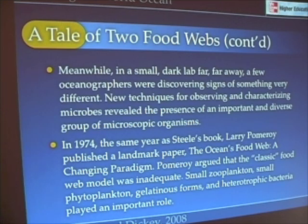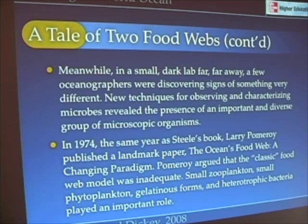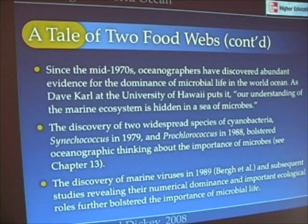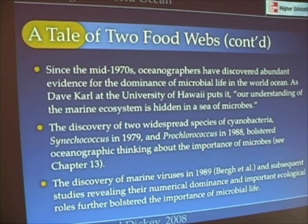In that same year that John Steele wrote The Structure of Marine Ecosystems, Larry Pomeroy published a paper called 'The Ocean's Food Web: A Changing Paradigm.' The net result of this is that we now have two food webs in the ocean: the classical food web and what's called the microbial food web.